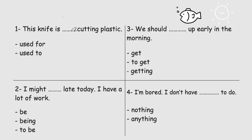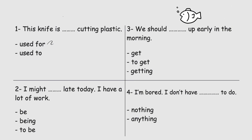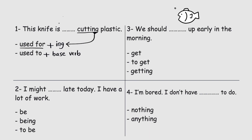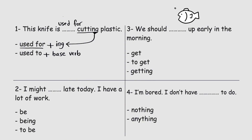This knife is blank — cutting plastic. 'Used for' and 'used to' both have the same meaning. The only difference is: 'for' comes with an -ing form, but 'to' comes with the base verb without -ing. Here we have 'cutting' with -ing, so the answer is 'used for'. This knife is used for cutting plastic, and you can also say 'used to cut plastic'.